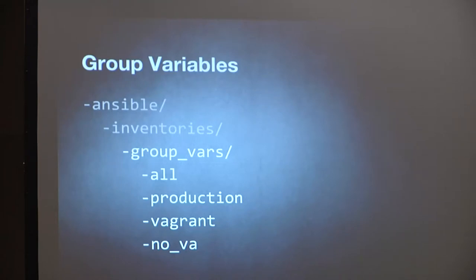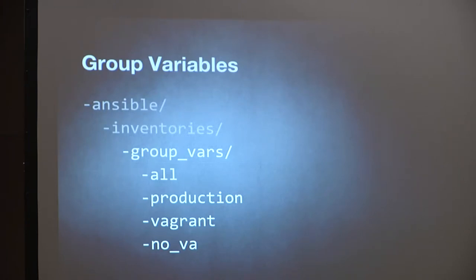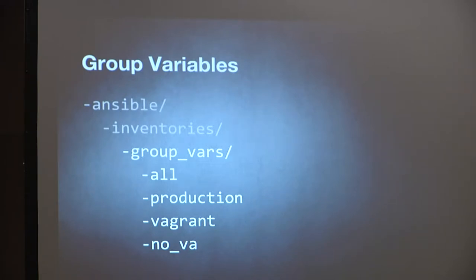Configuration variables are set through variables that match up to your groups. This represents a directory structure in your playbook system: an ansible root, an inventories directory underneath it with testing, development, staging, production inventories, and then a group_vars subdirectory with sets of files describing the configuration for each group defined in your inventories.